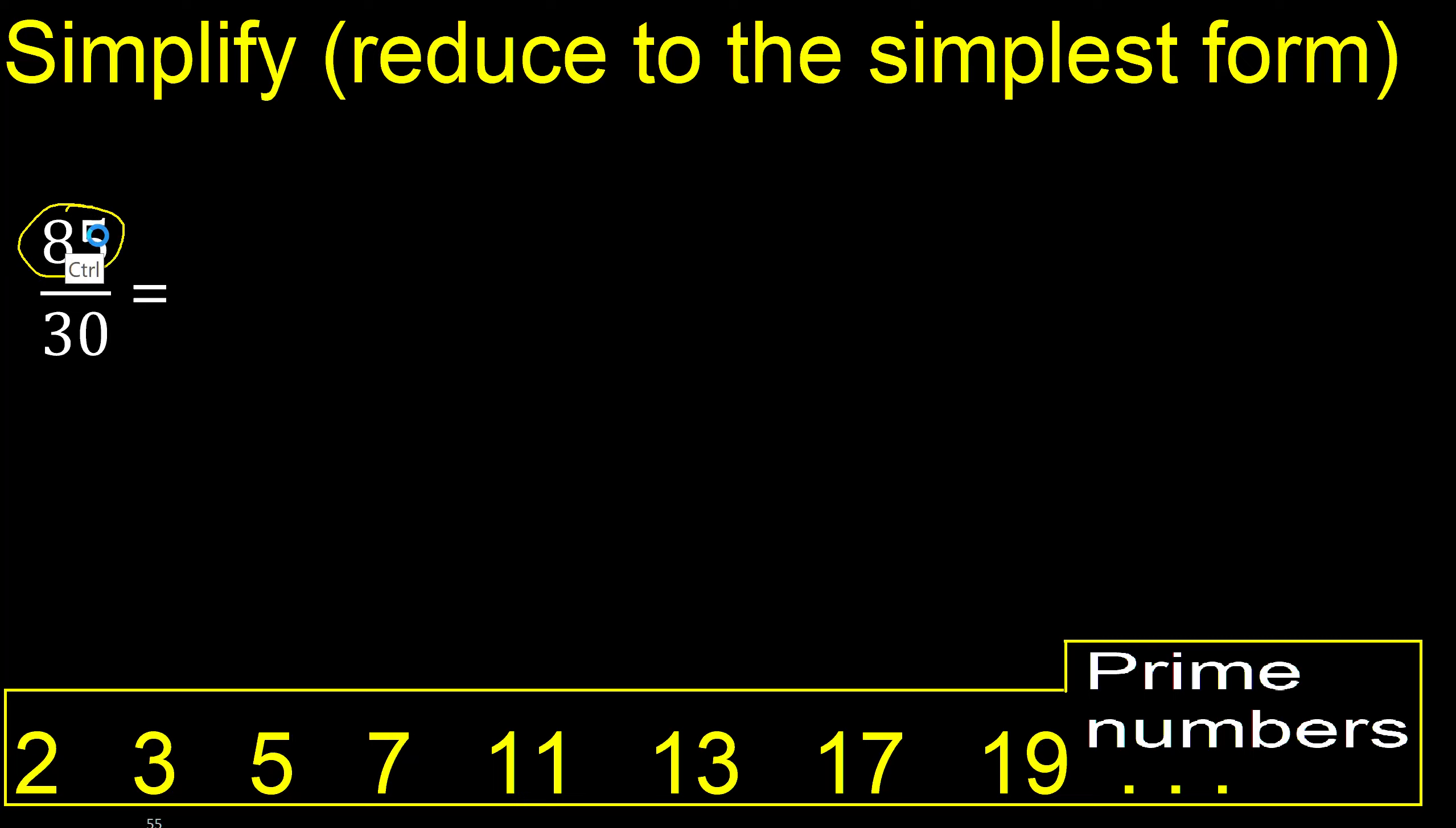Can 85 and 30 be divided by 2? No, because 85 cannot be divided by 2 because the last digit is not even. Can it be divided by 3? No, because 85 cannot be divided by 3 because 8 plus 5 is 13, and 13 cannot be divided by 3.